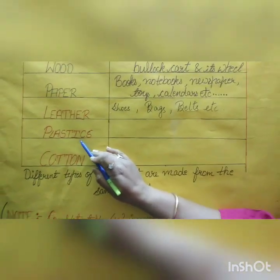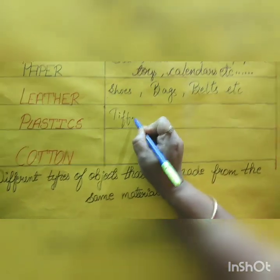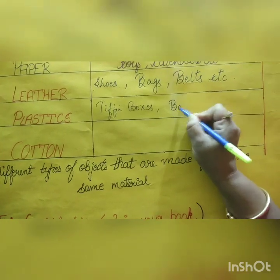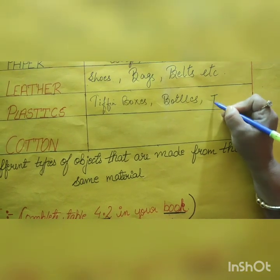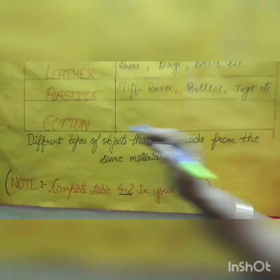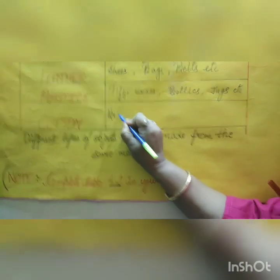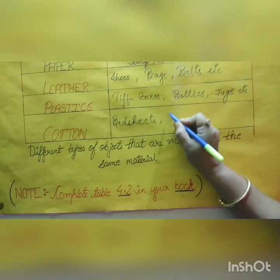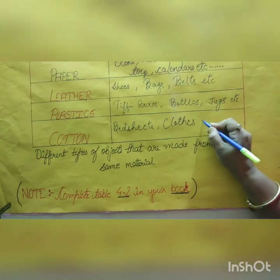Now we come to plastics. Plastics — they can be tiffin boxes, bottles, containers, jugs, and etc. Then we come to cotton. Cotton comes as bedsheets, then fabrics which we can say clothes, and there are so many, that is etc.